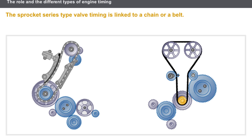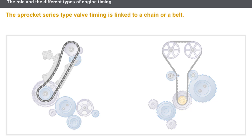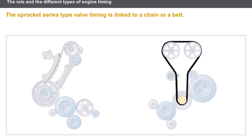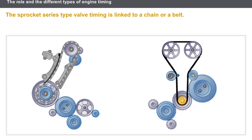Finally, let's take a look at the timing using a series of sprockets linked to a chain or a belt. These configurations are usually used for high-pressure diesel engines.